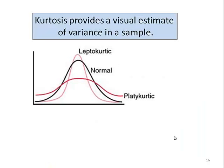Kurtosis provides a visual estimate of variance in a sample. It's a measure of whether the data are peaked or flat relative to a normal distribution.